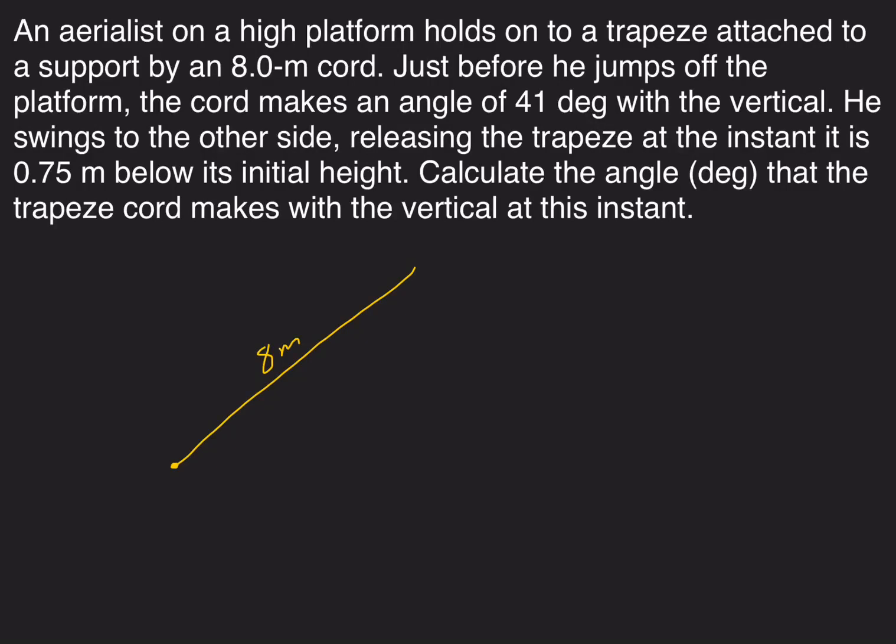The angle with the vertical at that time is right here, and that's 41 degrees. So he's going to swing to the other side, but he's not going to get all the way there. He's going to release the trapeze at the instant it is 0.75 meters below its initial height.